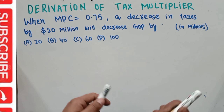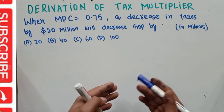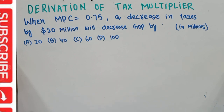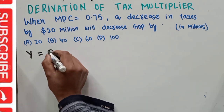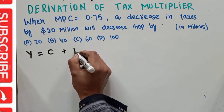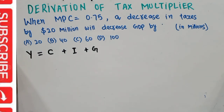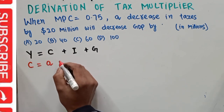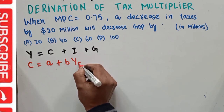Before we solve this, let us first derive the tax multiplier, because we will be applying it to find the effect of a decrease in tax on GDP. As we know, the national income identity is that total income is either used for consumption, investment, or government spending. Consumption is equal to autonomous consumption plus b — the marginal propensity to consume — times disposable income.